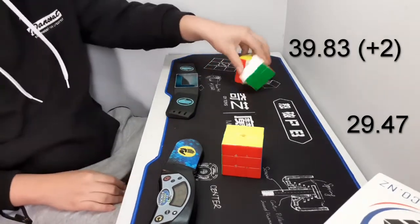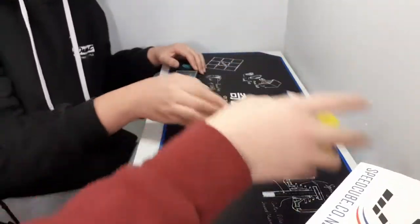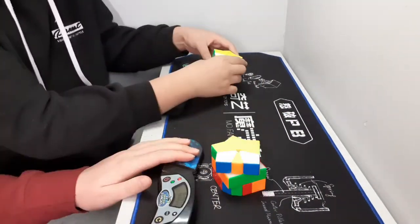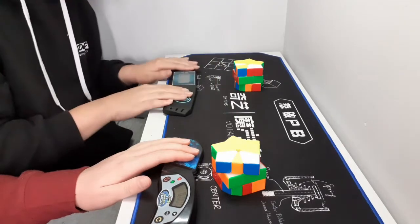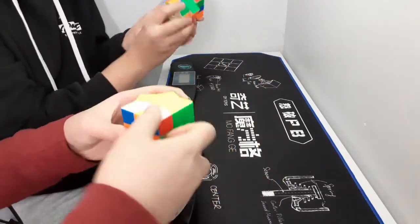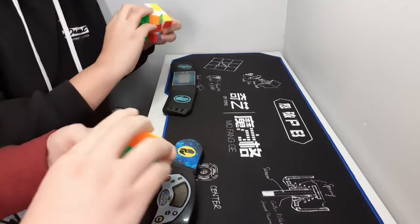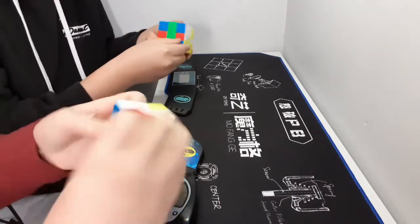Oh, E perm, dude. I think that's the worst cube shape.